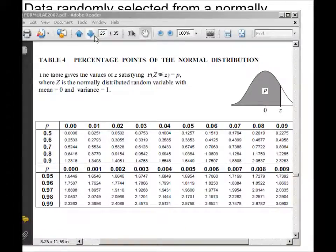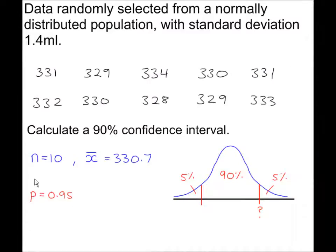Go to the AQA formula book, table 4, page 25, and look up the probability. P is equal to 0.95.